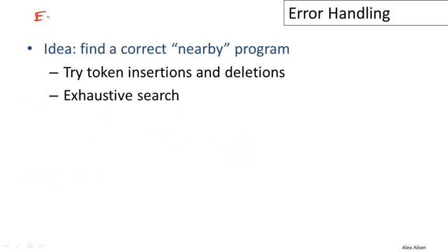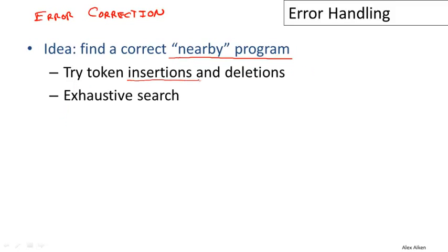The last strategy to discuss is error correction. So far we've talked about detecting errors, but we could also try to fix them. If the program has mistakes, the compiler could try to help the programmer by finding a nearby program that works. Two approaches people have tried are token insertions and deletions, where you minimize the edit distance to determine whether a corrected program is close to the original. You can also do exhaustive search within some bounds to try all possible programs close to what was supplied.